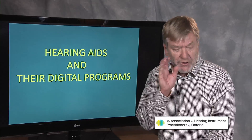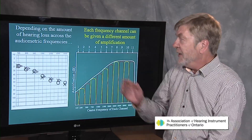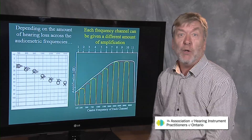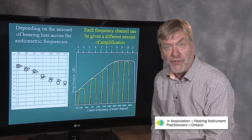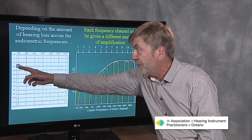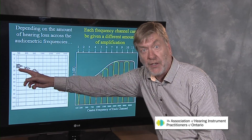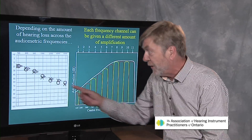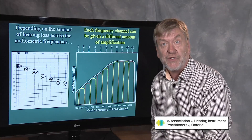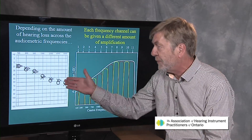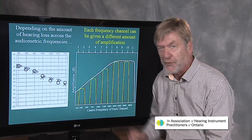Let's look at hearing aids further. Here's someone's hearing loss — typical presbycusis. Mild hearing loss in the lows, sloping down to a moderate hearing loss in the high frequencies. Typical presbycusis.